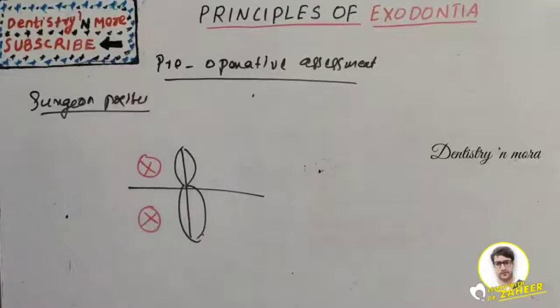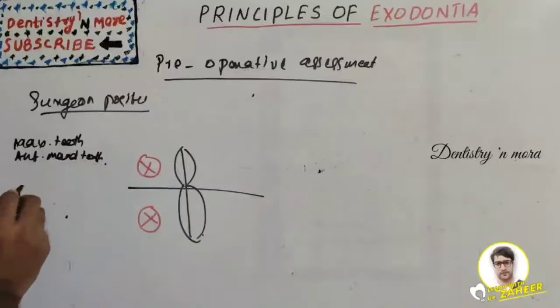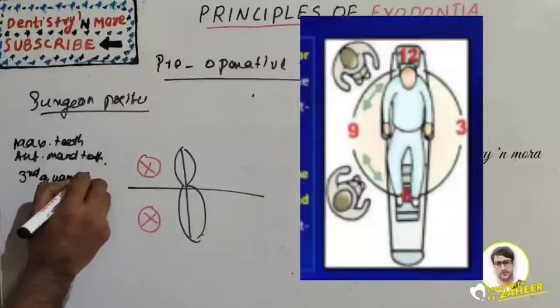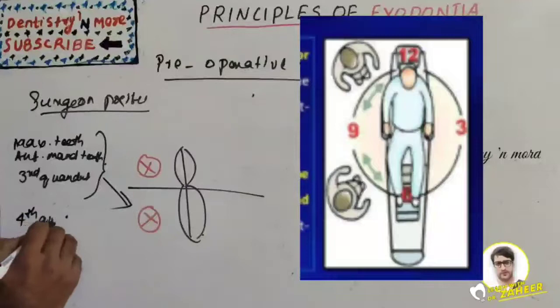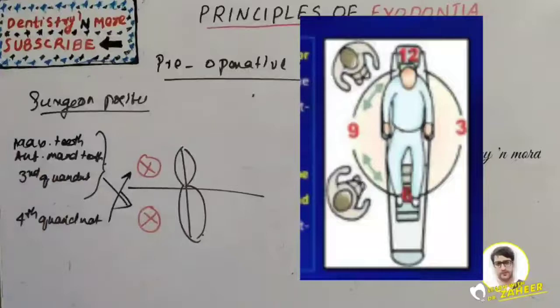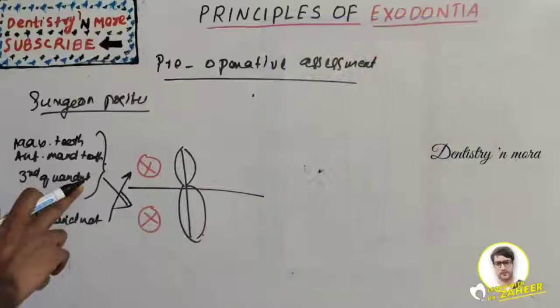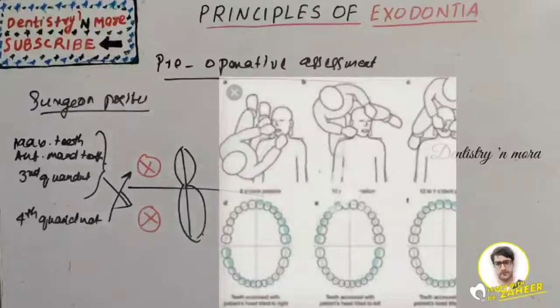Regarding the surgeon's position: for all maxillary teeth, anterior mandibular teeth, and teeth of the third quadrant, the surgeon should be at the right front position. For the fourth quadrant — that is the mandibular right side — the surgeon should be at the right back position. This is how the surgeon should be seated.